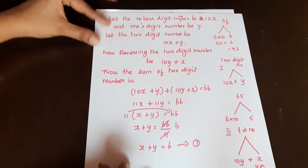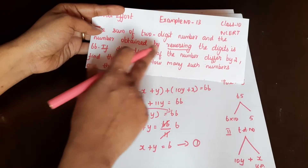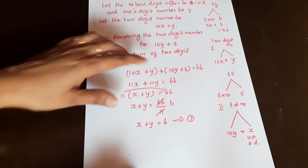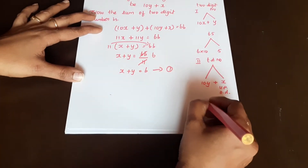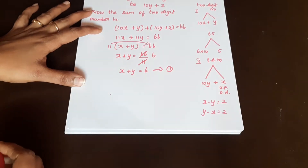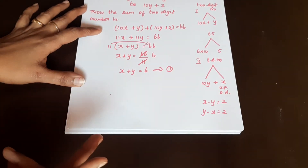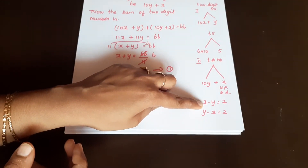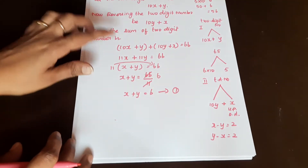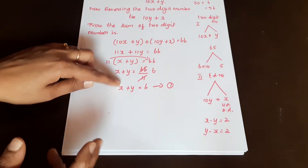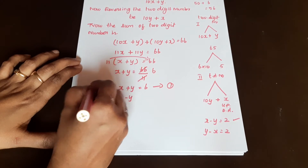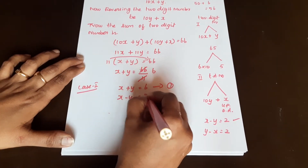Now we form equation number 2. The problem says the digits of the number differ by 2. Since 'differ' means subtraction, we have two possible cases: x minus y = 2, or y minus x = 2. We will solve both cases. For case 1, we take x minus y = 2 as equation number 2.